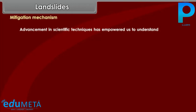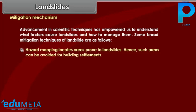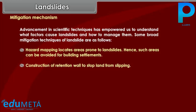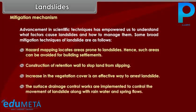Mitigation mechanisms. Advancement in scientific techniques has empowered us to understand what factors cause landslides and how to manage them. Some broad mitigation techniques of landslides are as follows: hazard mapping locates areas prone to landslides so such areas can be avoided for building settlements; construction of retention walls to stop land from slipping; increase in vegetation cover is an effective way to arrest landslides; and surface drainage control works are implemented to control the movement of landslides along with rainwater and spring flows.